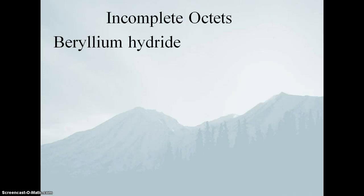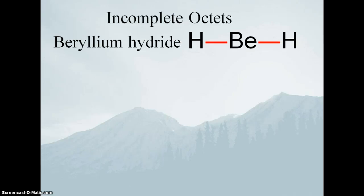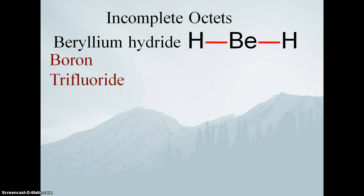Some other exceptions: what if we just don't have enough electrons to make any octets? For example, beryllium hydride gives us a total of four valence electrons — there's beryllium, hydrogen, hydrogen, and there are our four electrons. And we're done. Beryllium can have an octet, but it doesn't want an octet. Beryllium in this case has a formal charge of zero, because it starts with two valence electrons in group two, and we take one from each bond, giving us a formal charge of zero. Then there's boron trifluoride.